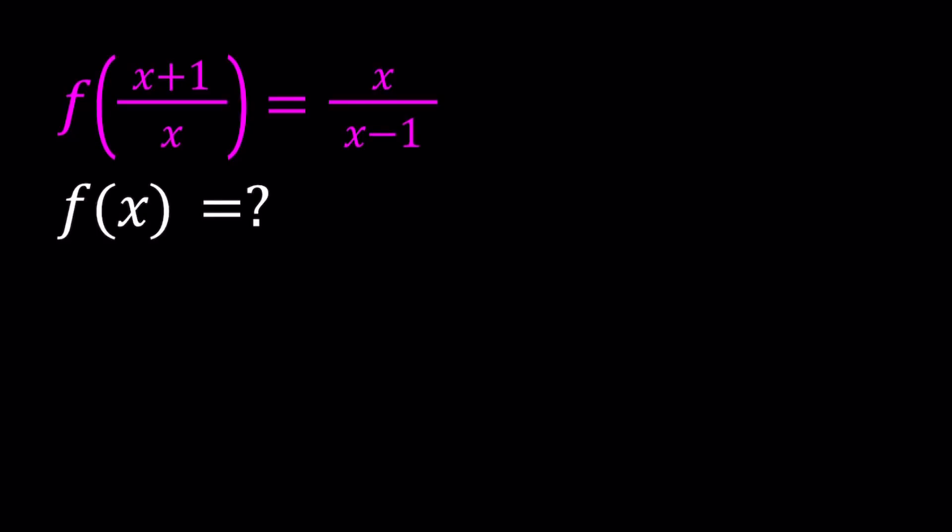Hello everyone. In this video we're going to be solving a functional equation, a basic one. We have f of x plus 1 over x equals x over x minus 1, and we're going to be finding f of x in terms of x. I'll be presenting two methods and let's start with the first one.